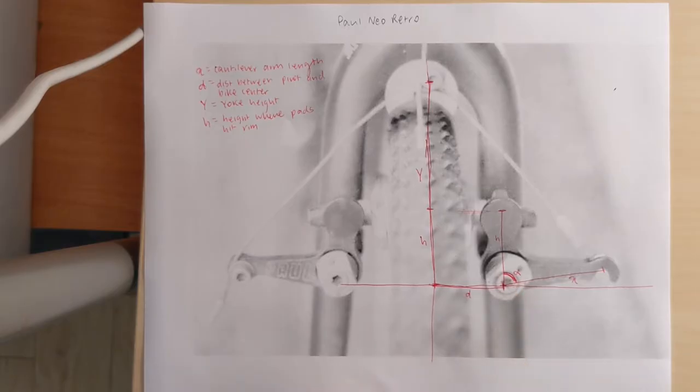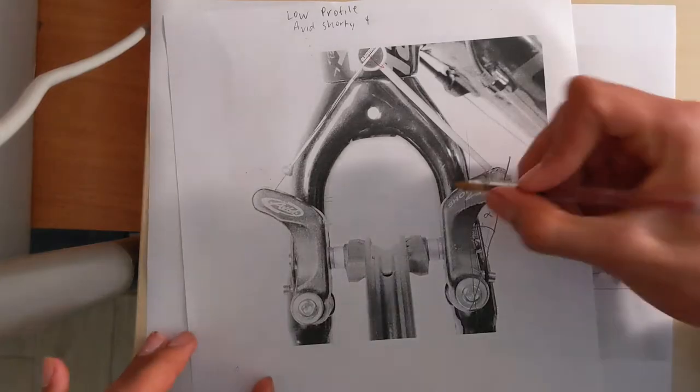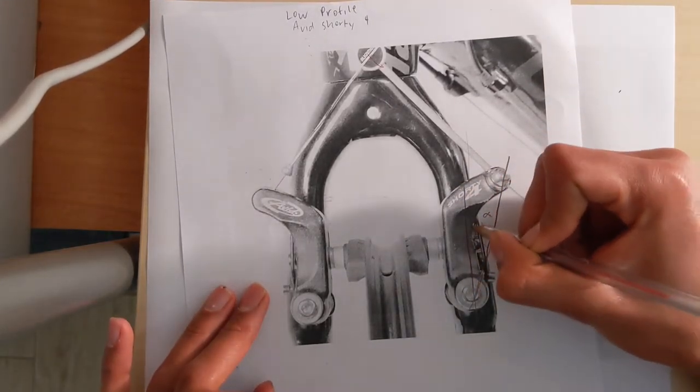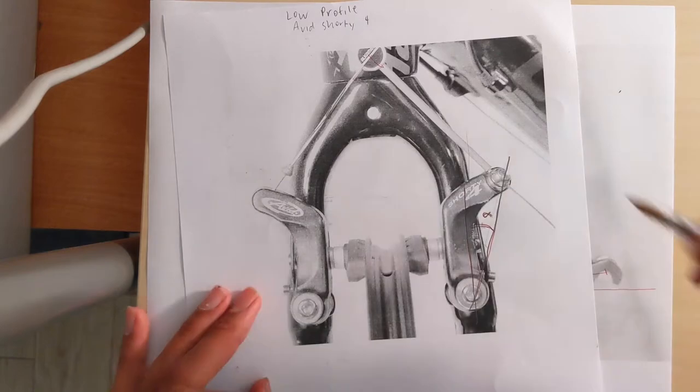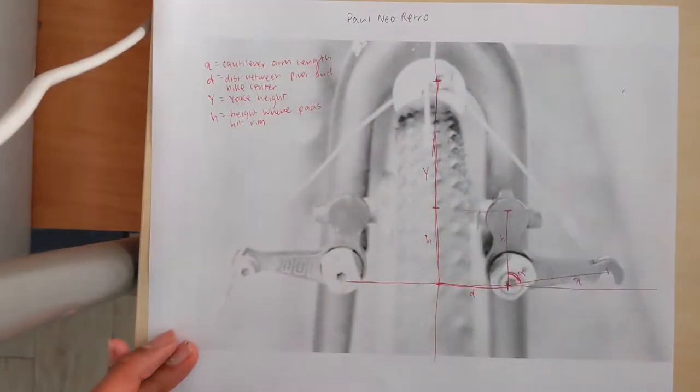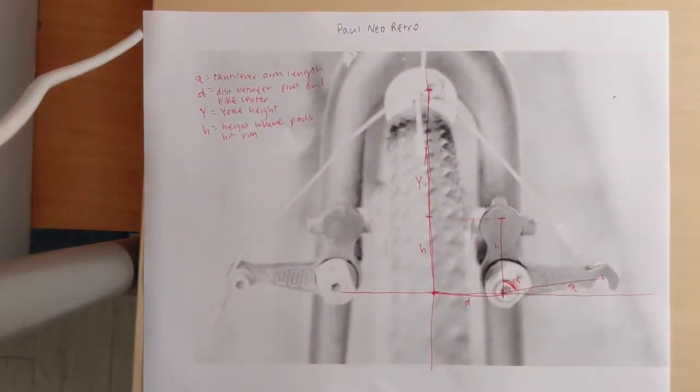If alpha is low, it's a low profile cantilever. We're going to do our calculations on a wide profile cantilever, but they're the same for low profile cantilevers as well.